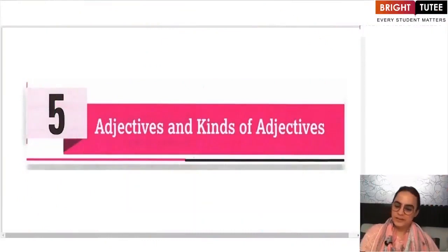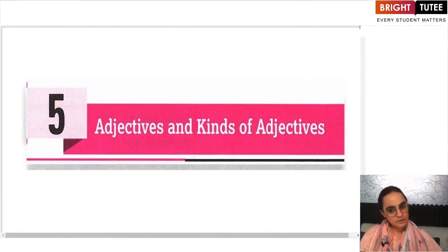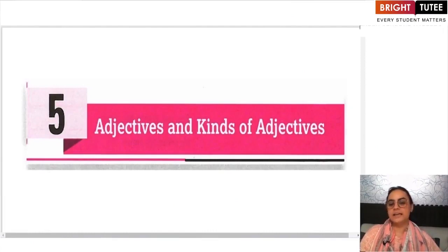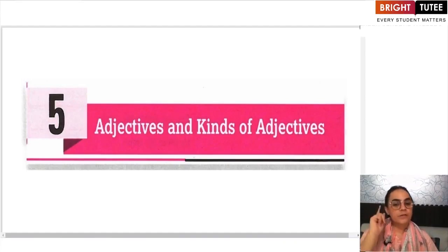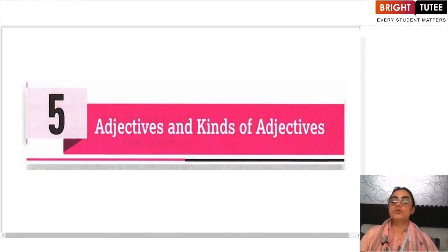Hello dear students, welcome to another lecture. In this class, we are going to begin with Chapter 5 of Class 7 English Grammar, which is Adjectives and Kinds of Adjectives. In this chapter, we are first going to understand what adjectives are, what the different kinds of adjectives are, and how to identify them in a sentence.